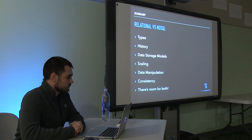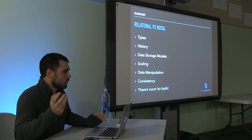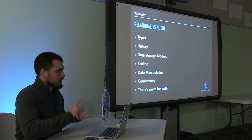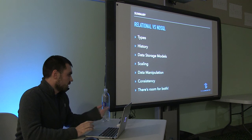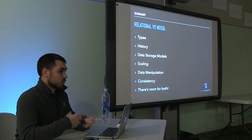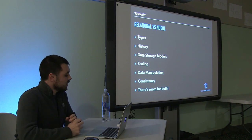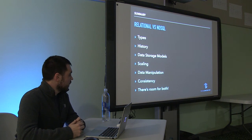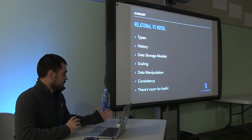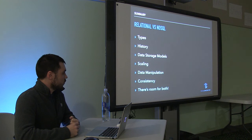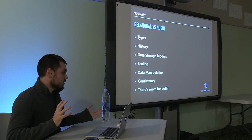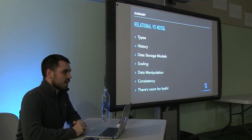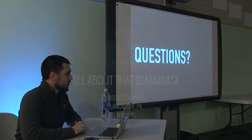In summary: relational databases have set types; NoSQL has key-value, graph, column, and document-based databases. Relational has a lot more history; NoSQL really doesn't. Storage models are more flexible in NoSQL. There are scaling trade-offs between the two. In relational databases the data manipulation language is SQL; in NoSQL it's more of an API. You'll make consistency trade-offs. While I've painted a black-and-white picture, really these are being used together widely now. Relational databases still have a place, and NoSQL definitely has a place.